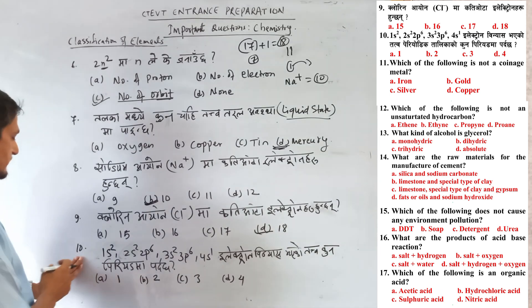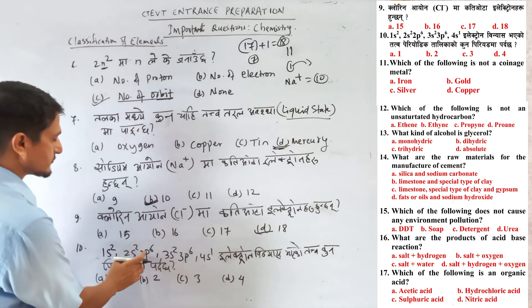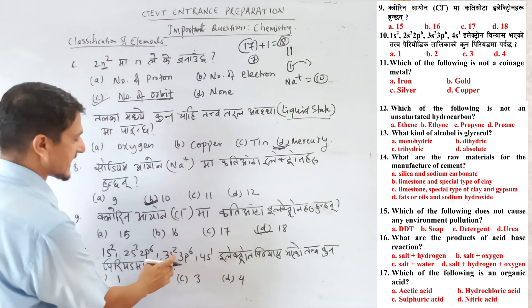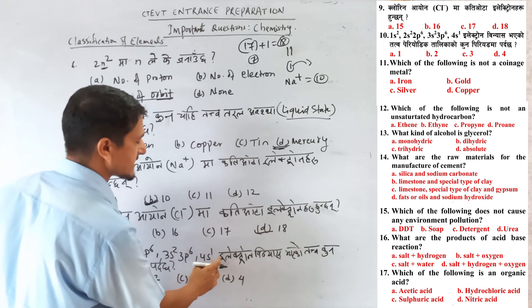Question number 10: The electronic configuration given is 1s2, 2s2, 2p6, 3s2, 3p6, 4s1.